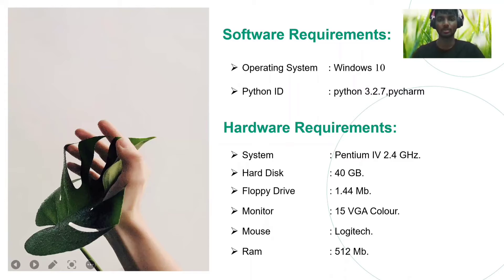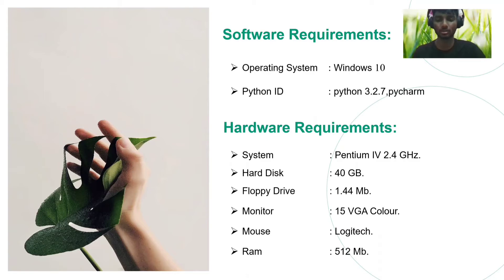Hi everyone, today I'm going to explain the software and hardware requirements of the project. Software requirements are Windows 10 with a minimum processor of i5 or i7. The software used for this project is Python 3.2.7 and PyCharm or PyDev. Hardware requirements include a minimum processor speed of 2.4 GHz, a hard disk of 40 GB. In this generation, hard disk drives are mostly not used; instead, SSDs are used, along with a monitor, a mouse, and a minimum RAM of 512 MB.